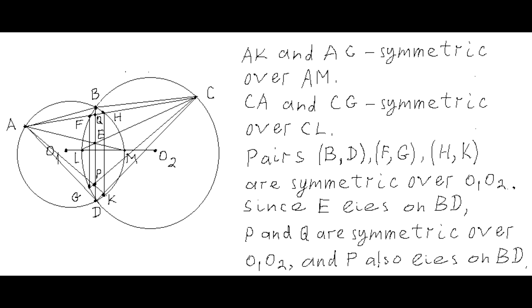Points H and K, lying on lines AC and AK respectively, are symmetric over line O1O2. So are points F and G, lying on lines CA and CG. Since B and D are also symmetric over line O1O2, and the two axes of symmetry AM and CL intersect at E on segment BD, the intersection of AC with BD — point Q — and the intersection of AK with CG — point P — are symmetric over line O1O2. Both P and Q lie on segment BD.